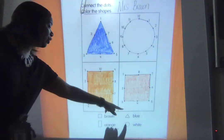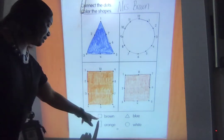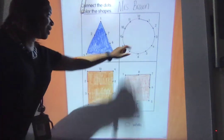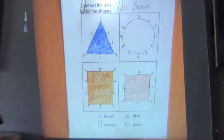The triangle is blue because that's what it told me to do. The rectangle is orange, my square is brown, and my circle I didn't have to color because it stays white.